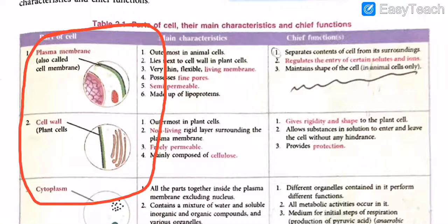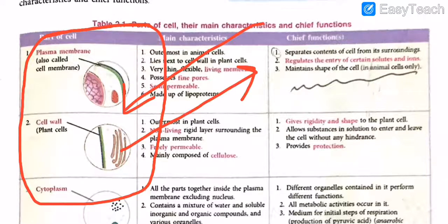The plasma membrane is a very thin, flexible, living membrane — underline that, it is given in bold in your textbook. It possesses fine pores and it is semi-permeable. What do we mean by semi-permeable? Some organelles are freely permeable, meaning they allow each and every substance to come in and go out. But the cell membrane does not allow each and every substance to go in and come out. It's almost like the watchman of your building — it only allows certain substances in and out.